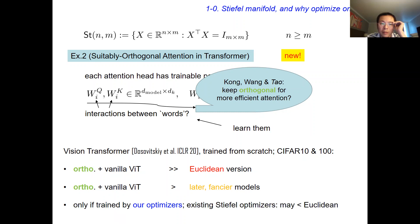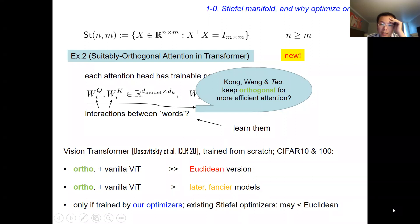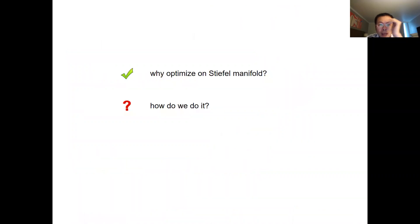This comes with some care: we have to train using our optimizers. There are existing Stiefel optimizers — some, for example, don't have momentum. So they don't respect the orthogonality constraint as much as we do, and therefore you may get performance that does not actually exceed the original version. Hopefully I've given enough motivation about why we want to optimize on the Stiefel manifold. The question now is how we do it.